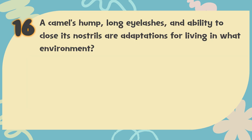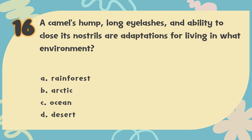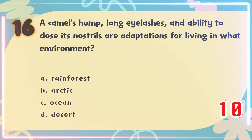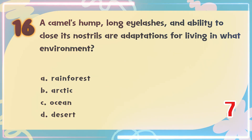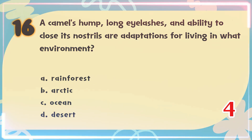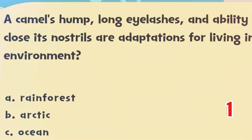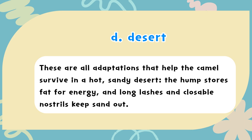Number 16. A camel's hump, long eyelashes and ability to close its nostrils are adaptations for living in what environment? The choices are: A. Rainforest, B. Arctic, C. Ocean, D. Desert. The correct answer is D. Desert. These are all adaptations that help the camel survive in a hot, sandy desert — the hump stores fat for energy, and long lashes and closeable nostrils keep sand out.